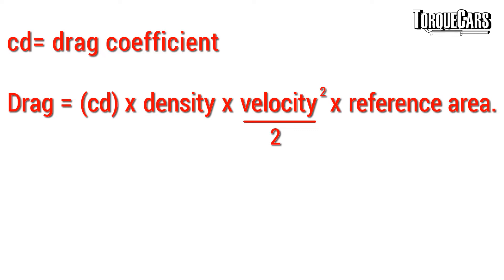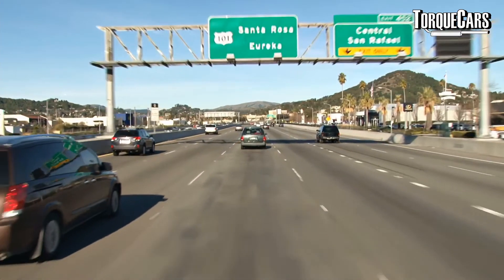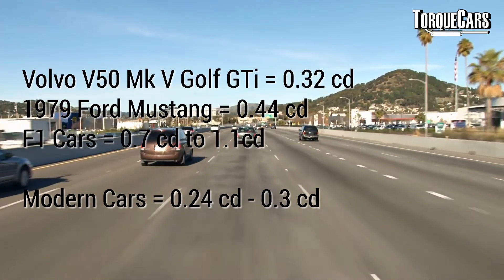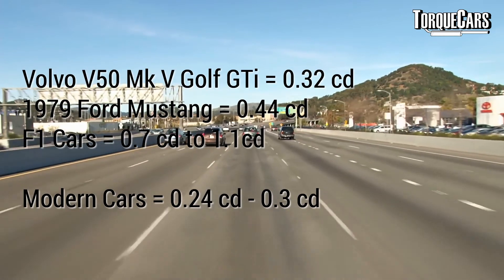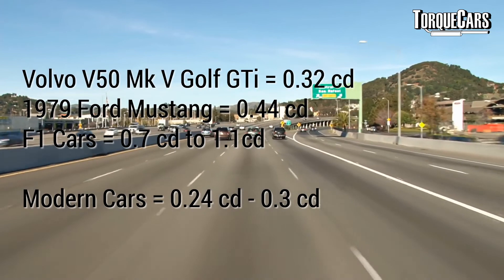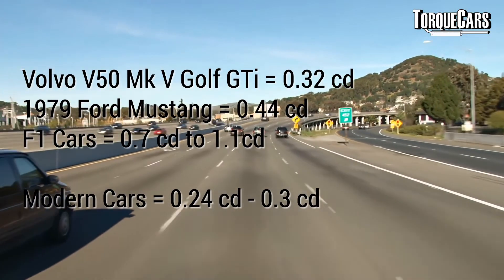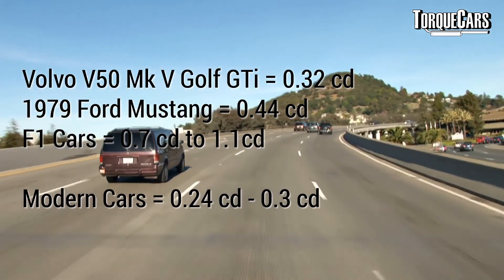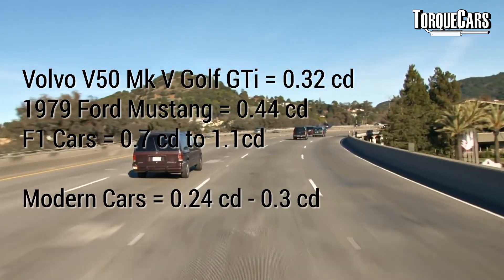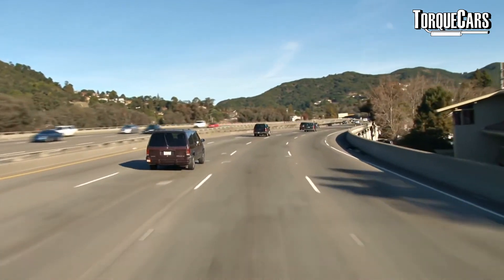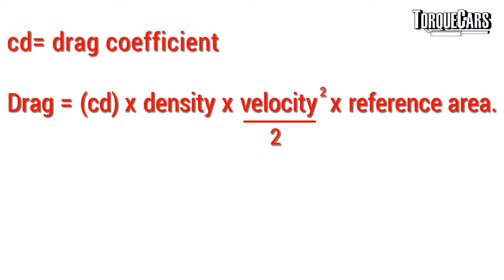The drag coefficient is quite complex to calculate — it's determined by many different aspects of the car. It's often quoted by car makers, and it's quite important to have a low drag coefficient, or low Cd. A Volvo V50 or a Mk5 Golf GTI has a Cd of about 0.32. A 1979 Ford Mustang measures about 0.44, and a typical F1 car clocks in at 0.7 to 1.1. Most modern cars are around 0.24 to 0.3, and a low drag coefficient means the car will be more economical to drive and will have to work less hard to maintain high speeds.